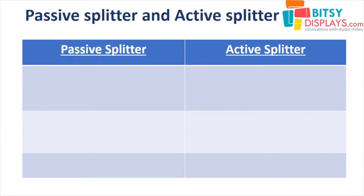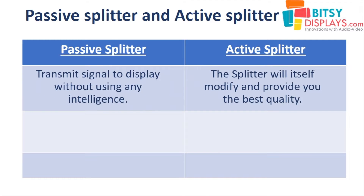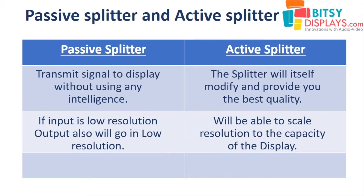For the basic limited configuration of a video wall, you can use a Passive Splitter or Active Splitter. Passive Splitter transmits signal to the display without using any intelligence. Active Splitter will itself modify and provide the best quality. If the input is low resolution, a Passive Splitter will output in low resolution as well, whereas an Active Splitter is able to scale the resolution to the capacity of the display.